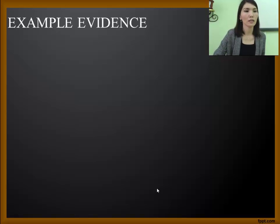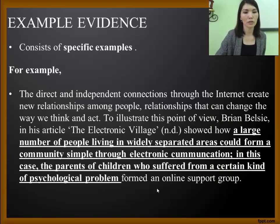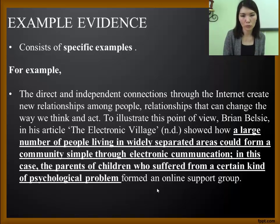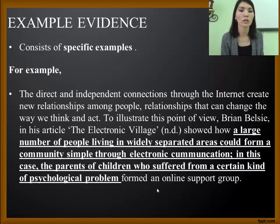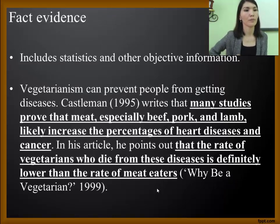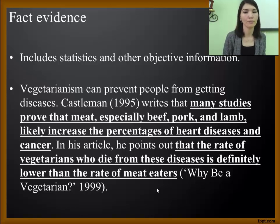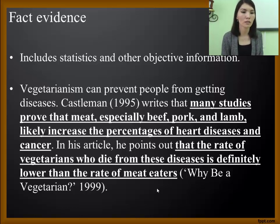Example evidence talks about specific examples. For example, to illustrate this point of view — 'to illustrate' is a keyword — 'a large number of people living in widely separate areas could form a community simply through electronic communication.' The next type is fact evidence. It includes statistics, data, and other types of objective information that supports your claim. For example: 'Many studies prove that meat, especially beef, pork, and lamb, likely increases the percentage of heart disease and cancer.'